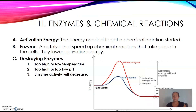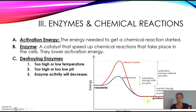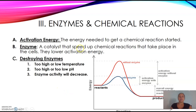Now talking about enzymes and chemical reactions. In a chemical reaction, you have your reactants and products. You have activation energy — the energy needed to get a chemical reaction started. Basically, a chemical reaction occurs and nothing is lost. Remember in science, nothing can be created or destroyed; it just scrambles and all the elements go to different places. Activation energy is the energy needed to get a reaction started. An enzyme is a catalyst, and its job is to speed up chemical reactions without using so much energy — that's what it means by lowering activation energy.